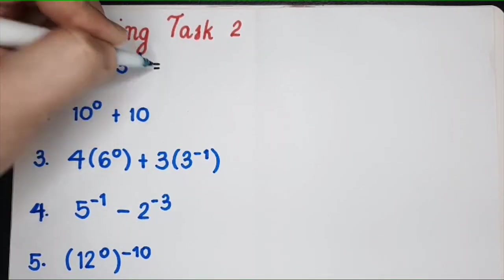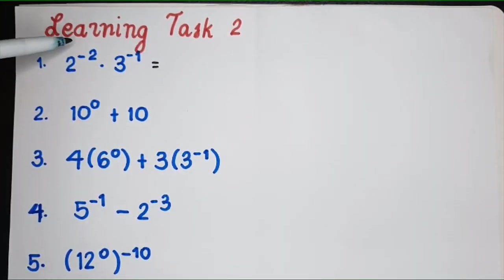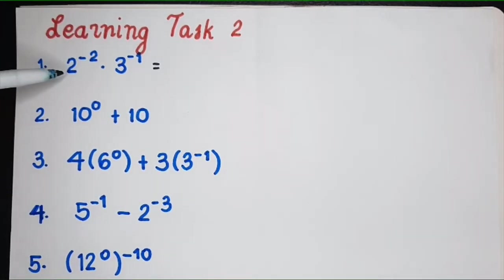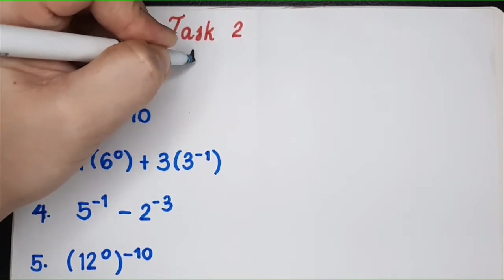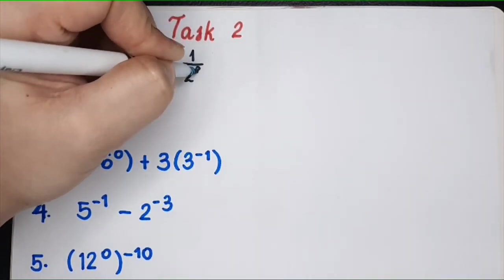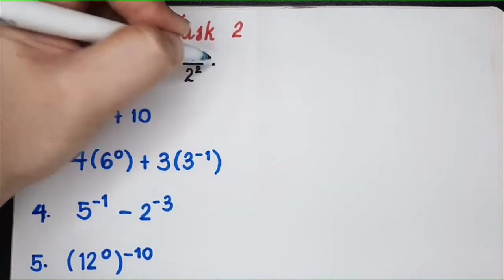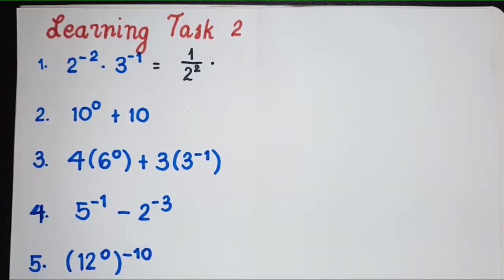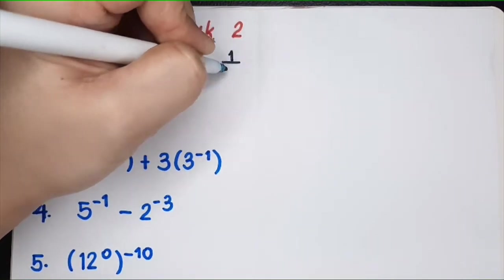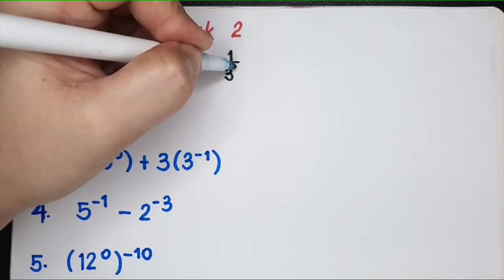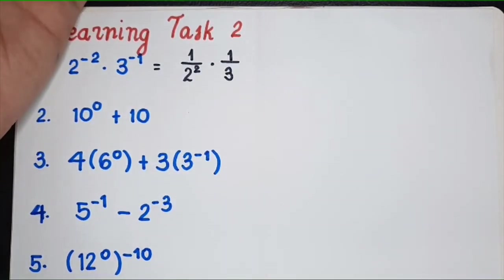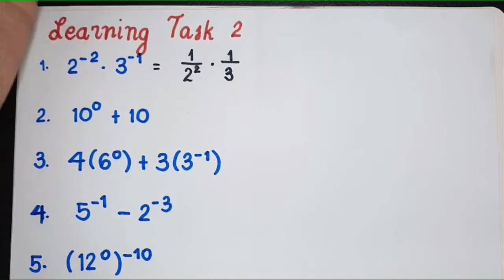For number 1, we're going to write the expression without negative exponents. So 2 raised to negative 2 becomes 1 over 2 squared, times 3 raised to negative 1, which becomes 1 over 3. When the exponent is 1, you just ignore it, so you only have 3 in the denominator.